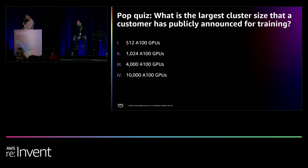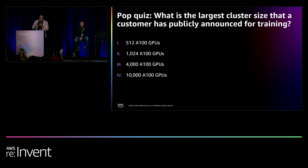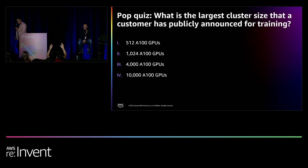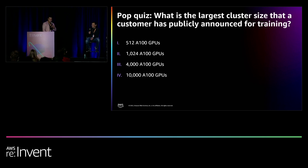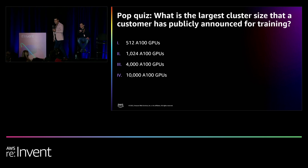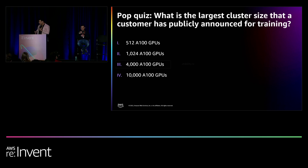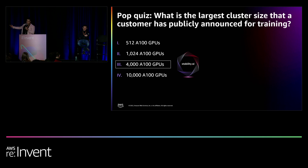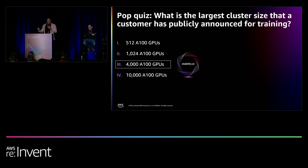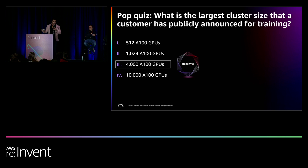First pop quiz — whoever gets this right gets a water bottle: what is the largest cluster size that has been publicly announced for training? The answer is 4,100. That's correct — Ultra Cluster. Ironically, it's from Stability AI and that number is now past 4,000. If Stability wants to, they can use those 4,000 GPUs for one training job, which is not out of the question — we do see customers doing things at that scale.